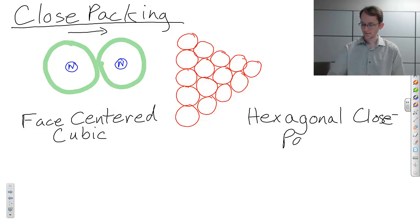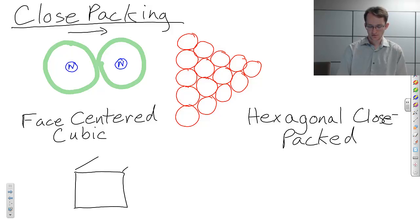And the other one is called hexagonal close-packed. The basic shape of the unit cell for face-centered cubic is going to be a cube, whereas the basic shape of hexagonal close-packed is going to be a hexagon, or hexagonal prism.